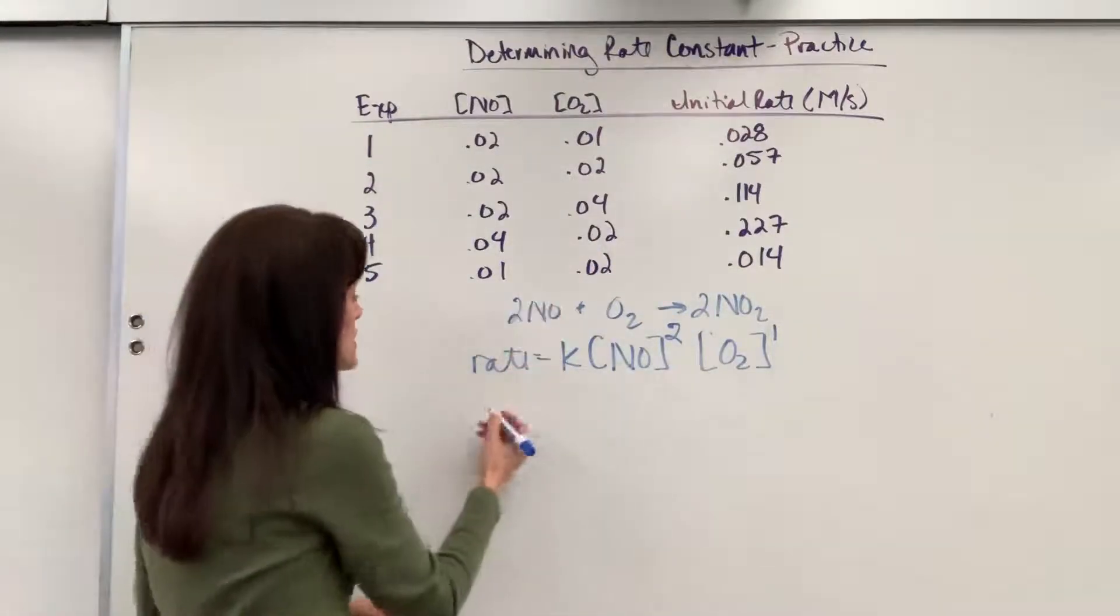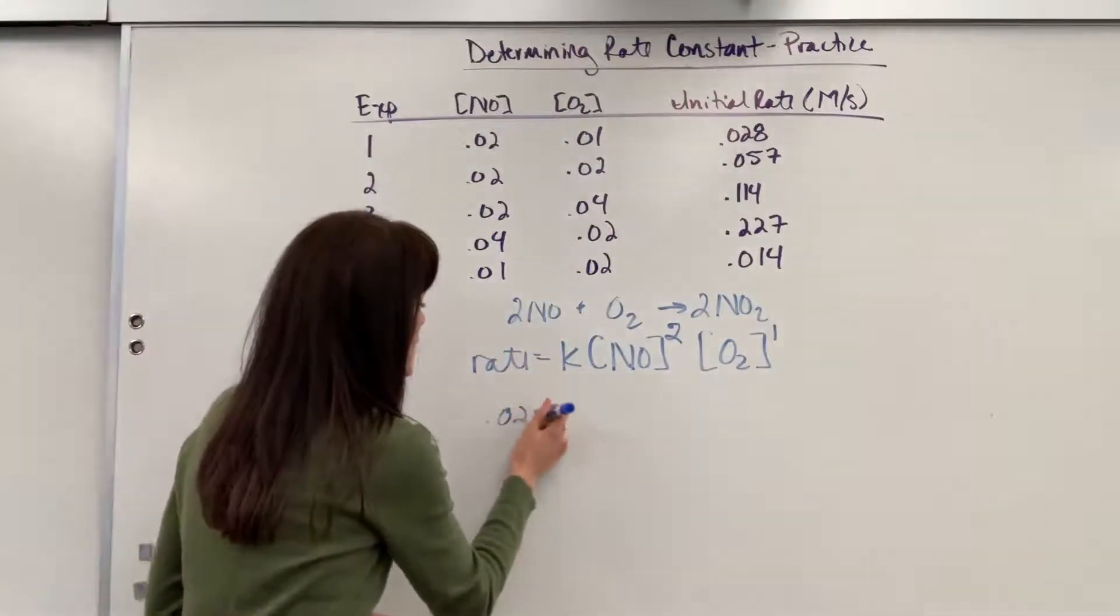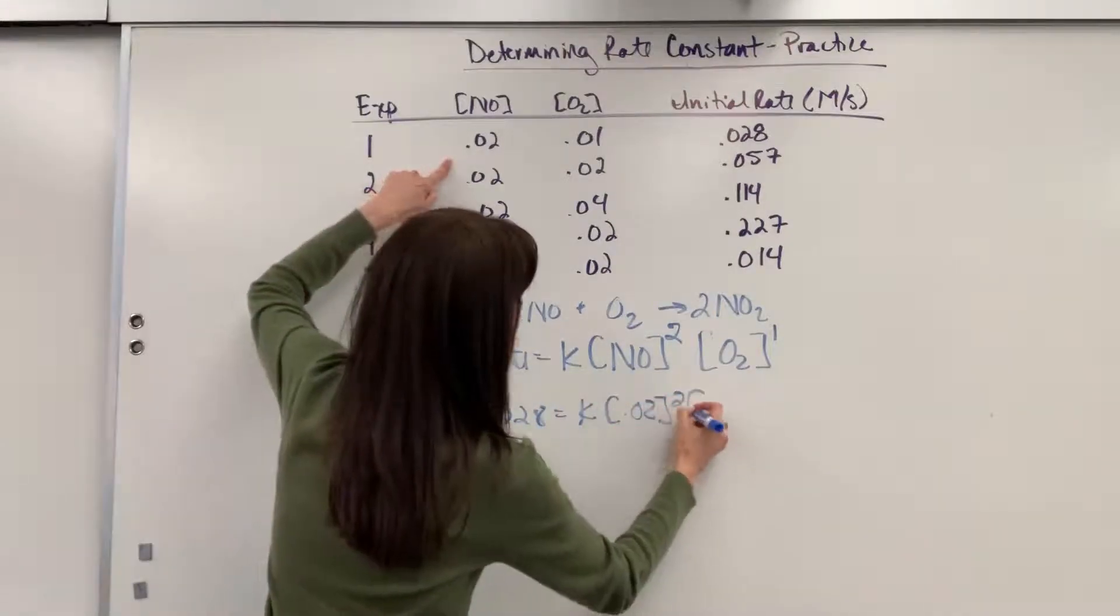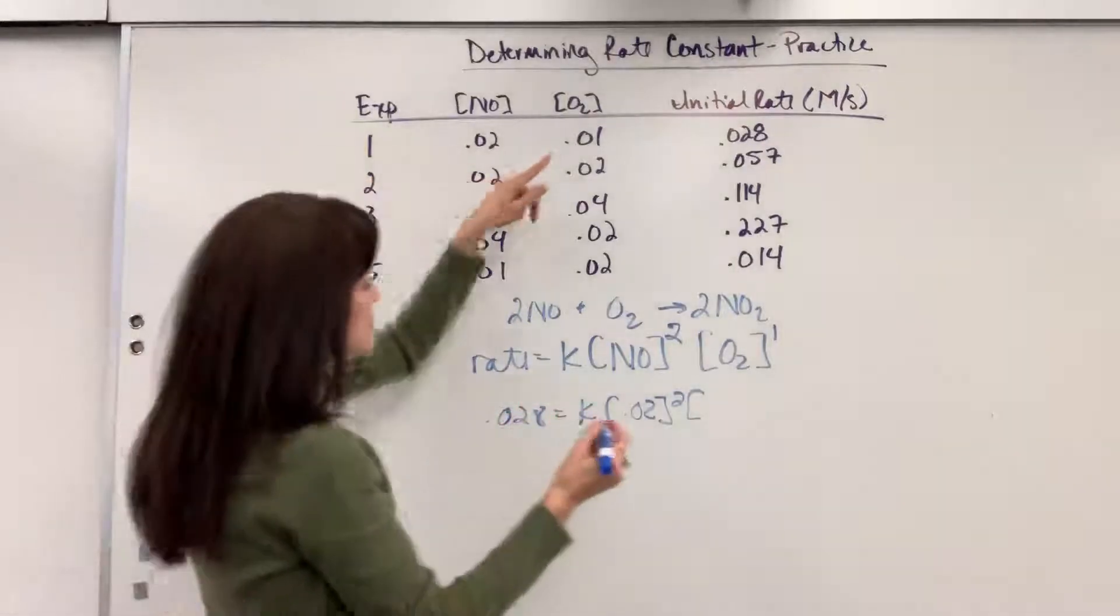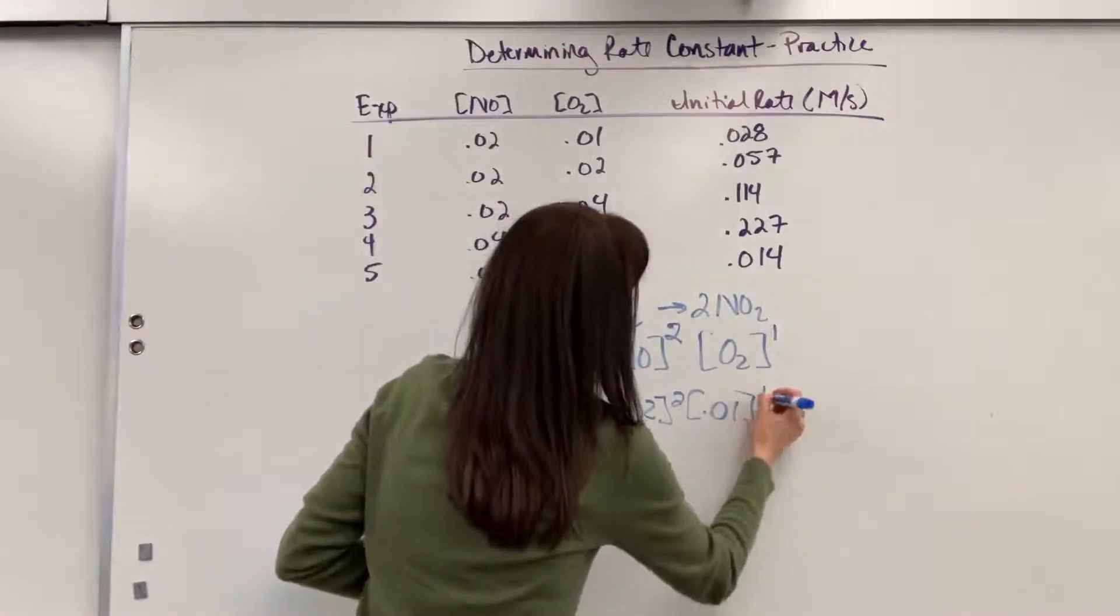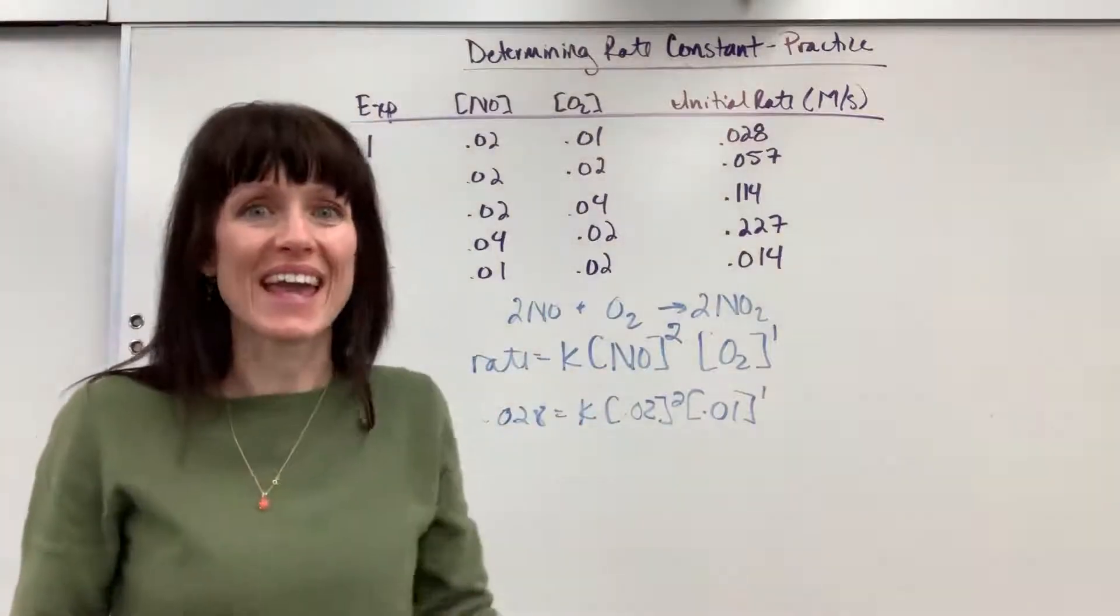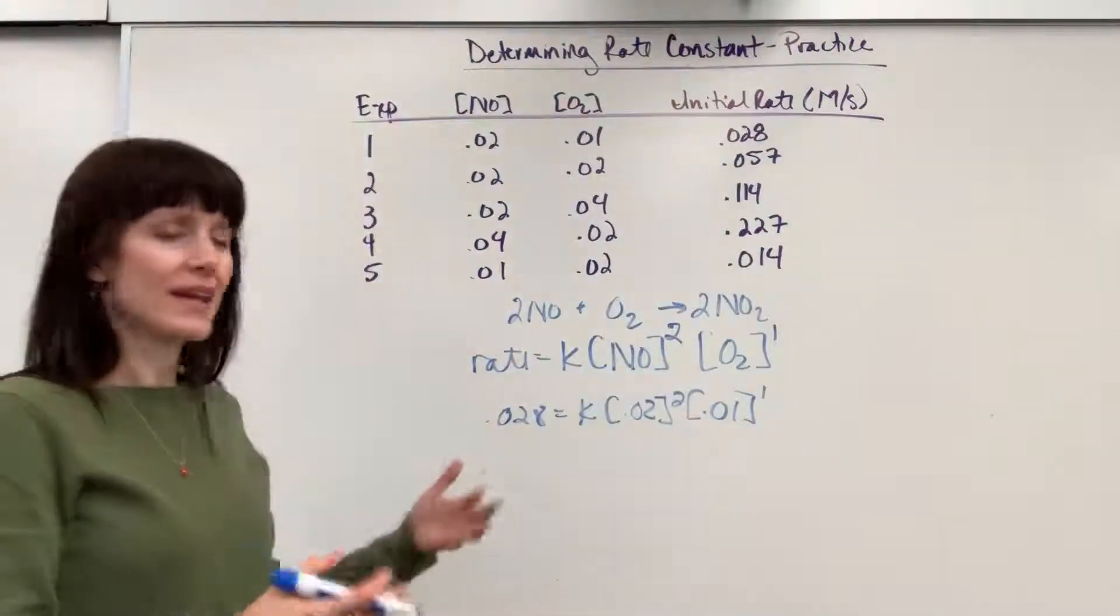So the rate is 0.028 equals K times concentration of O2 squared, second order, times the concentration of 0.01, first order. Notice we have one unknown. It's K, the rate constant. So let's go ahead and do our math.